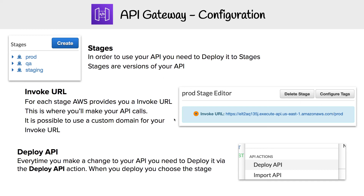In order to deploy these versions to a stage, you go to your actual API and perform the Deploy API action. Every time you make a change, you have to do the Deploy API action — it doesn't automatically happen. That's something that confused me for some time, because you think you made the change, so why isn't it working? It's generally because you have to do Deploy API.